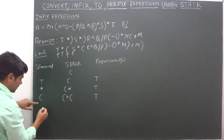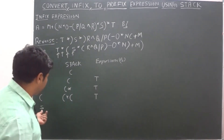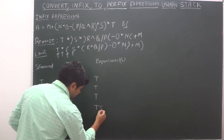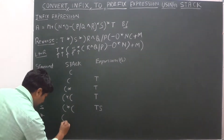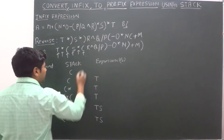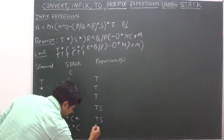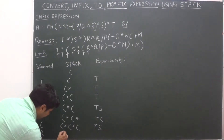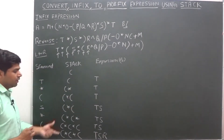Next element is S. S is an operand. Whenever an operand is encountered, we add it directly to the expression. Expression becomes T, S. Next is star — that is an operator — so we push it onto the stack. Then comes a left parenthesis, which we also push onto the stack. Expression remains T, S.